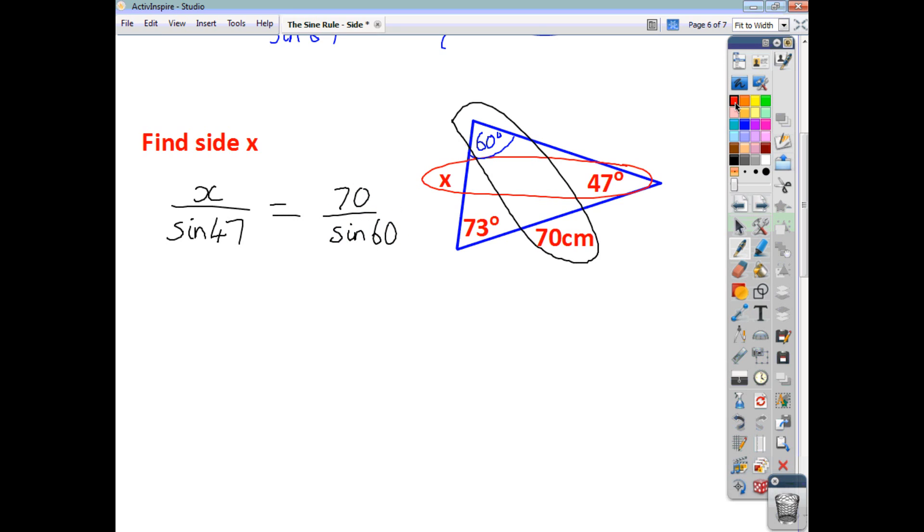So, we can say that x over sine 47 is equal to 70 over sine 60. Cross multiplication, get everything onto one level. So, x times sine 60, that's equal to 70 times sine 47. Divide everything by sine 60 and we get that x is 70 sine 47 divided by sine 60. And we work that out to one decimal place at 59.1 cm. And with all of these questions, always ask yourself, does my answer make sense? Does it look in proportion? And there you have a side of 70 and this side at 59.1 looks correct.